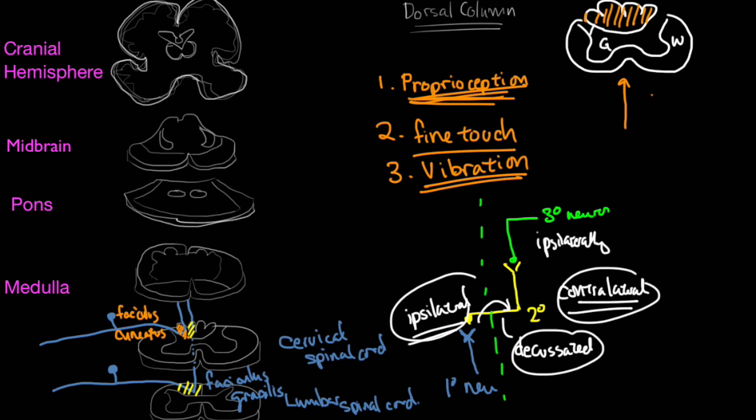So, the fasciculus gracilis, or the from the lower limb, they continue up into the medulla and synapse here. Whereas the fasciculus cuneatus come up to the medulla and synapse here. And this is a very important part in the medulla oblongata, where they, what they synapse at, is at these two nuclei.